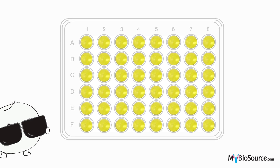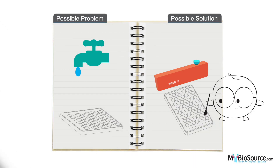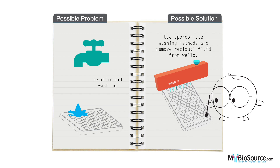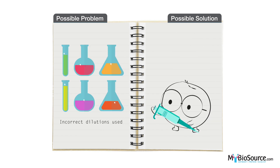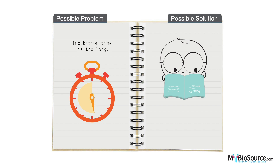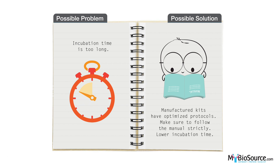Problems with too much signal can be caused by the following: insufficient washing of the ELISA plate. In this case please use appropriate washing methods and remove residual fluid from the wells. Incorrect dilutions may also lead to high signal; please ensure your pipetter is properly calibrated and increase the dilution factor when retesting. The incubation time may also be too long. Our kits have optimized protocols specific for each catalog; please ensure to strictly follow the manual included with your kit and lower incubation time if necessary.